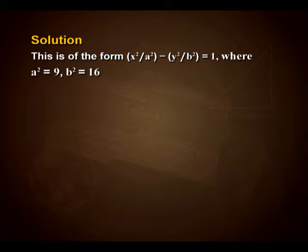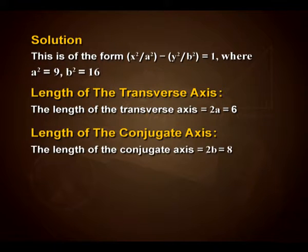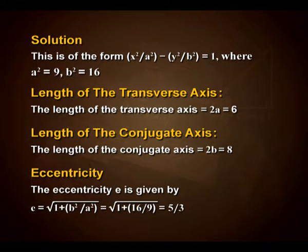For the solution, we can see this is of the form x²/a² − y²/b² = 1, where a² = 9 and b² = 16. Length of the transverse axis is 2a = 6. Similarly, the length of the conjugate axis is 2b = 8. Eccentricity E is given by √(1 + b²/a²) = √(1 + 16/9), which on simplification gives us 5/3.